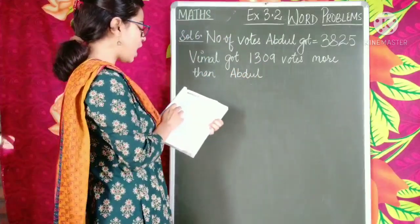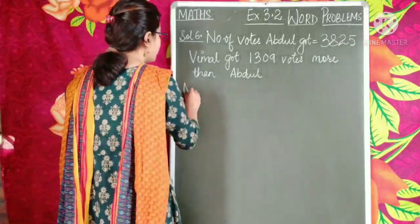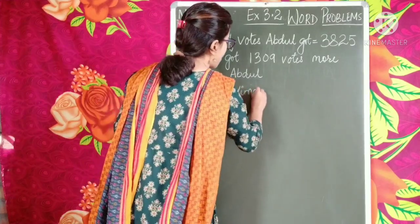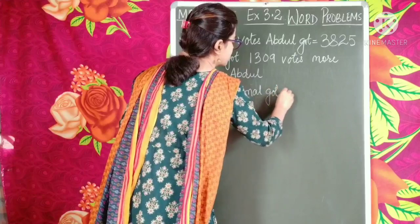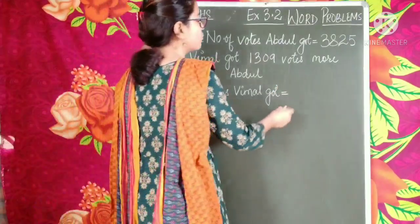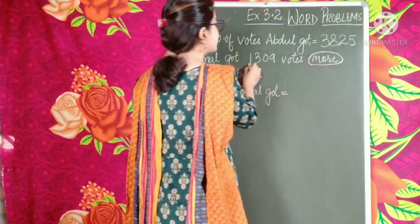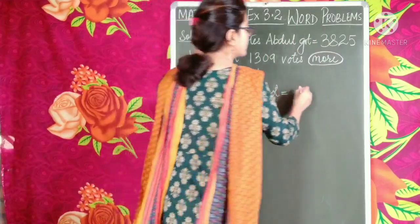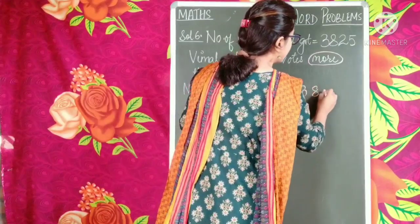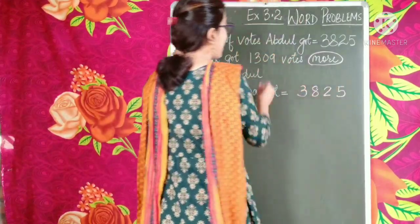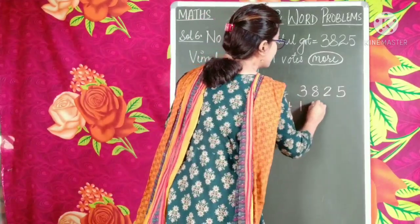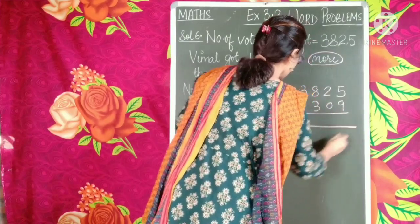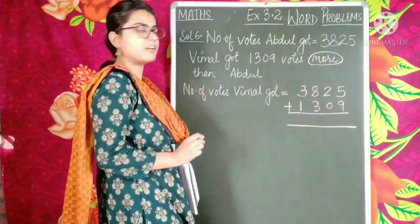We have to find out how many votes did Vimal get. Number of votes Vimal got — as I told you children, we look for the keywords. Here the keyword is 'more'. He got this many votes more than Abdul, so this number needs to be added to Abdul's votes. We first write the number of votes that Abdul got — 3,825 — added to the extra votes which Vimal got, 1,309. And now we find out the sum, the number of votes that Vimal got.